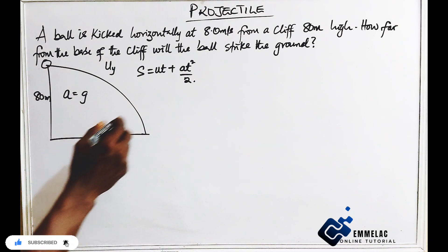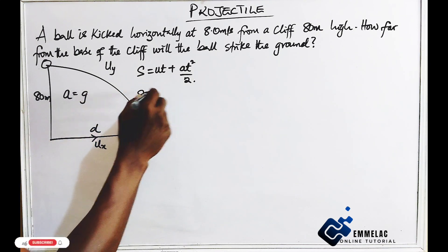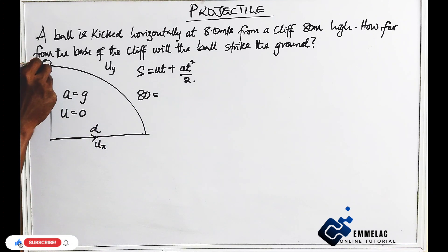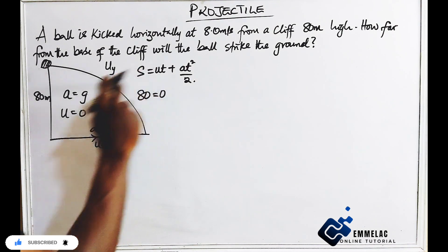So the height here is 80. Now at this point u will be 0 because the ball actually started from what? The ball was initially on rest before it was kicked. So to monika the height of this expression becomes 0.